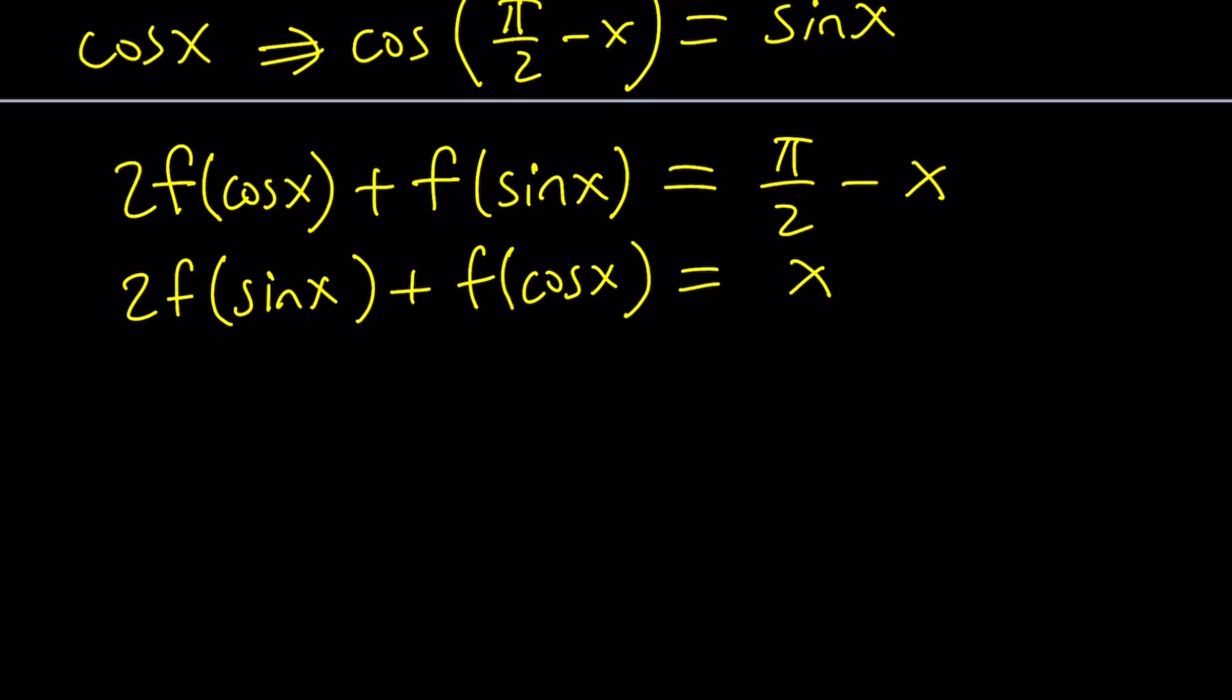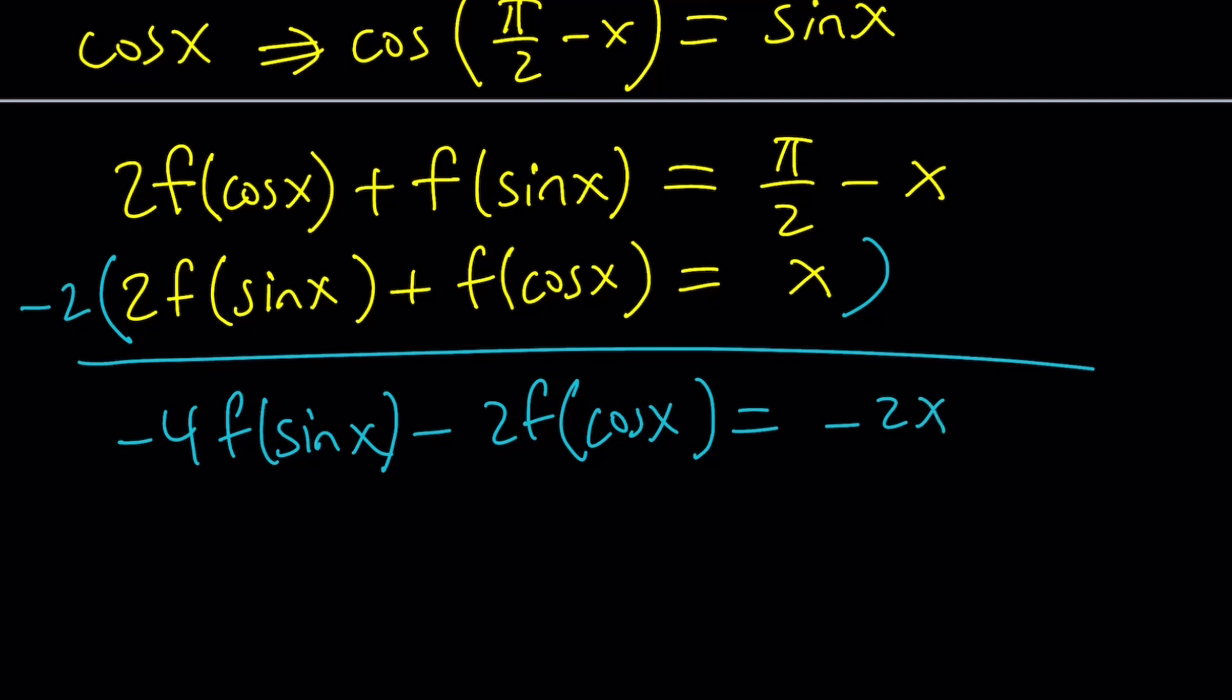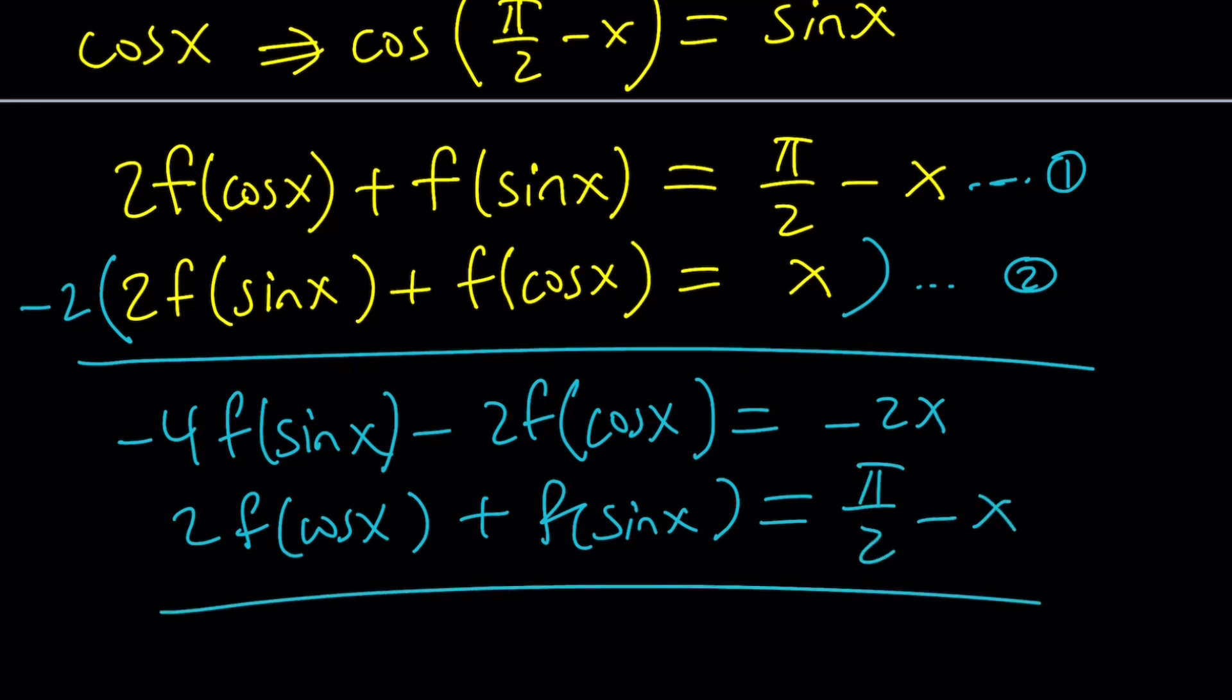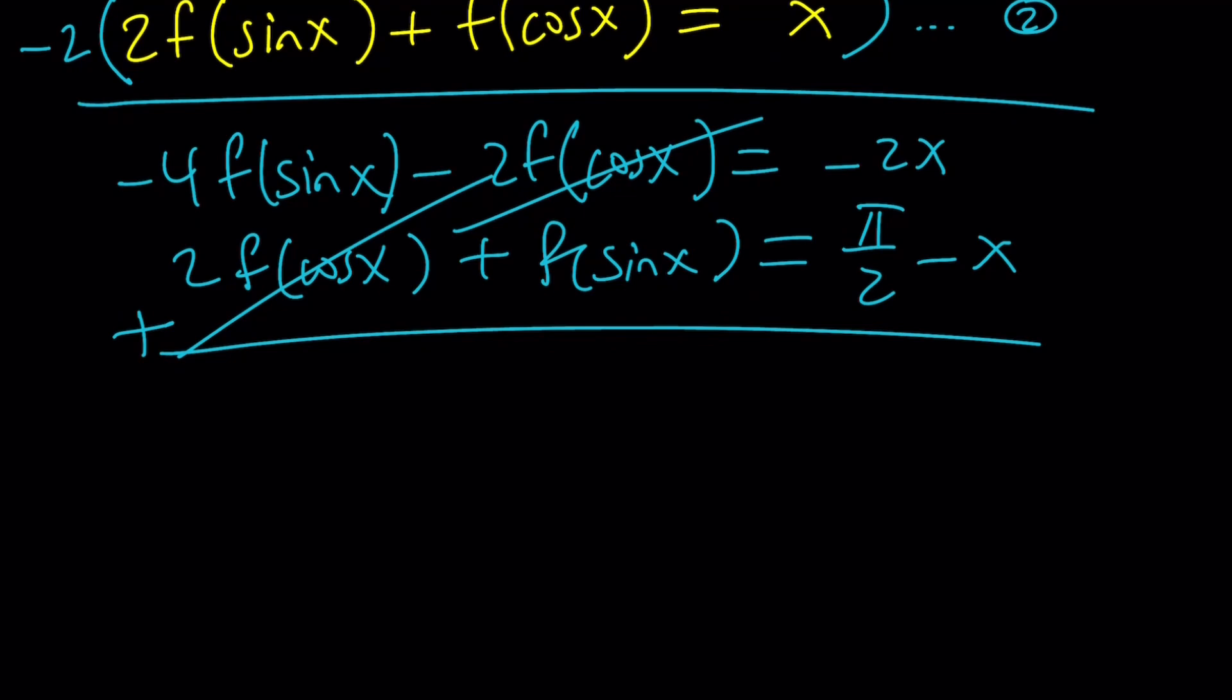To eliminate f of sine x, I'm going to multiply the second equation by negative 2. That's going to give us negative 4f of sine x minus 2f of cosine x equals negative 2x. And then the first equation, this is the second one. Now I'm going to get 2f of cosine x plus f of sine x equals pi over 2 minus x. Now let's add these equations. That cancels out the 2f of cosine x, leaving us with negative 3f of sine x equals pi over 2 minus 3x.